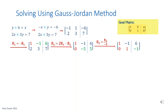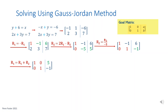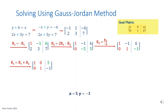Now it's time to change element 1,2 to 0. Simply add the first and second rows. 0 and 1 is 1; 1 and negative 1 is 0; and negative 1 and 6 is 5. Since the goal matrix has been obtained, it's time to find the values for the variables. x equals 5 and y equals negative 1.